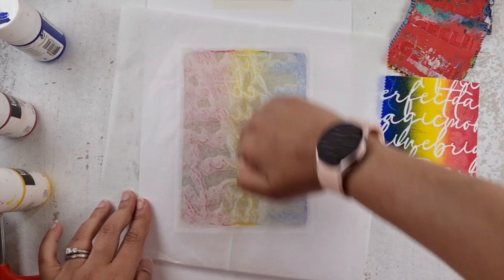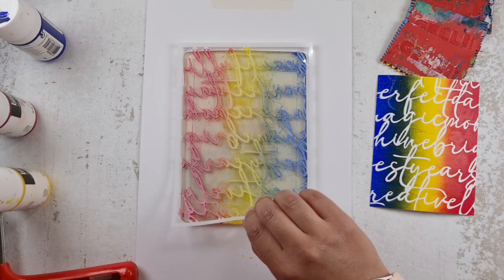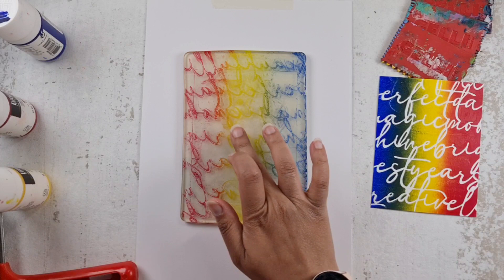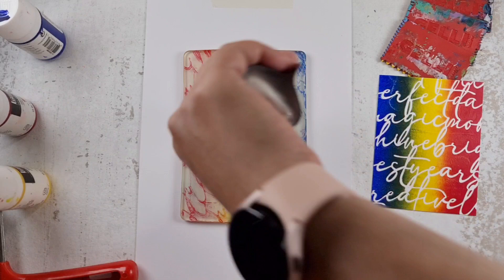And then while the stencil is still on there, I'm just making sure that I've lifted all of the paint so that I can get a nice and crisp image. A few moments later. And then I am just letting that dry completely for a few minutes. And I'm going to pull a ghost print. So that means that I've let the paint dry, the first layer dry.